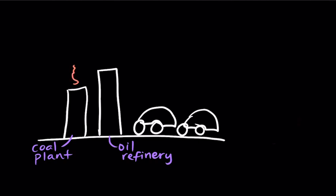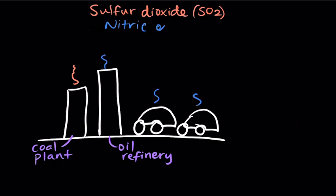A common byproduct of coal burning plants or smelters and other industrial facilities is sulfur dioxide, SO2. At the same time, high temperatures from combustion engines and oil refineries provide enough energy to break apart nitrogen and oxygen molecules in the air. These molecules can then recombine to form different nitrogen oxides like nitric oxide, NO, and nitrogen dioxide, NO2.